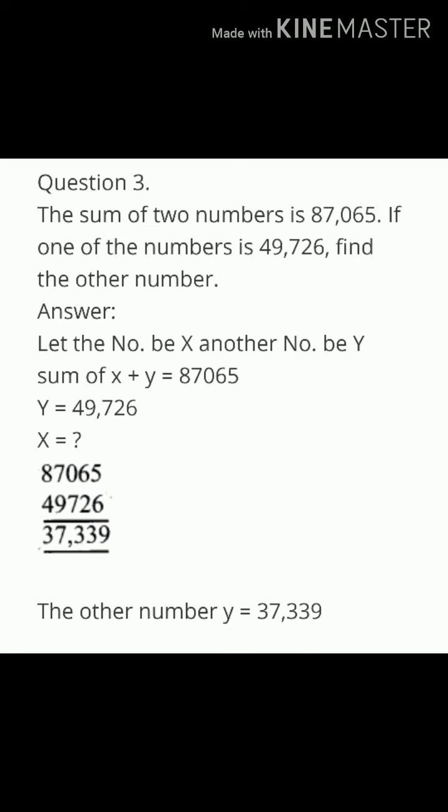Third one: the sum of two numbers is 87,065. If one of the numbers is 49,726, find the other number. So let the number be x, another number be y. Sum of x and y is 87,065. Y equals 49,726, because already given.